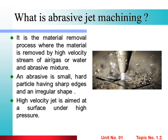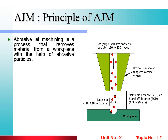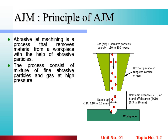High-velocity jet is aimed at a surface under high pressure. In abrasive jet machining, a high-velocity jet is used for material removal from the workpiece. The process consists of a mixture of fine abrasive particles and gas at high pressure. Gas along with abrasive particles strikes through a nozzle on the workpiece to give it the required shape and size.